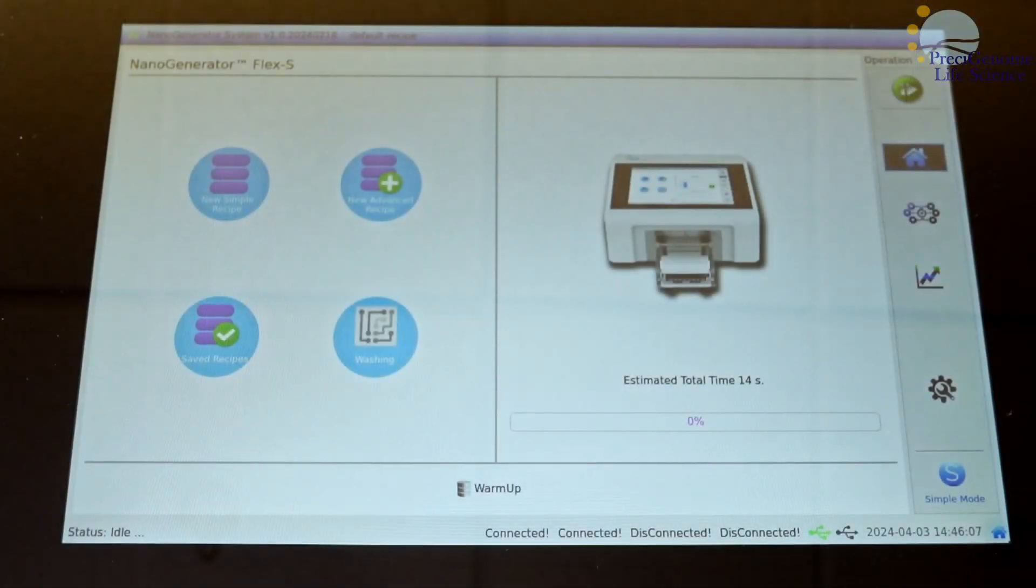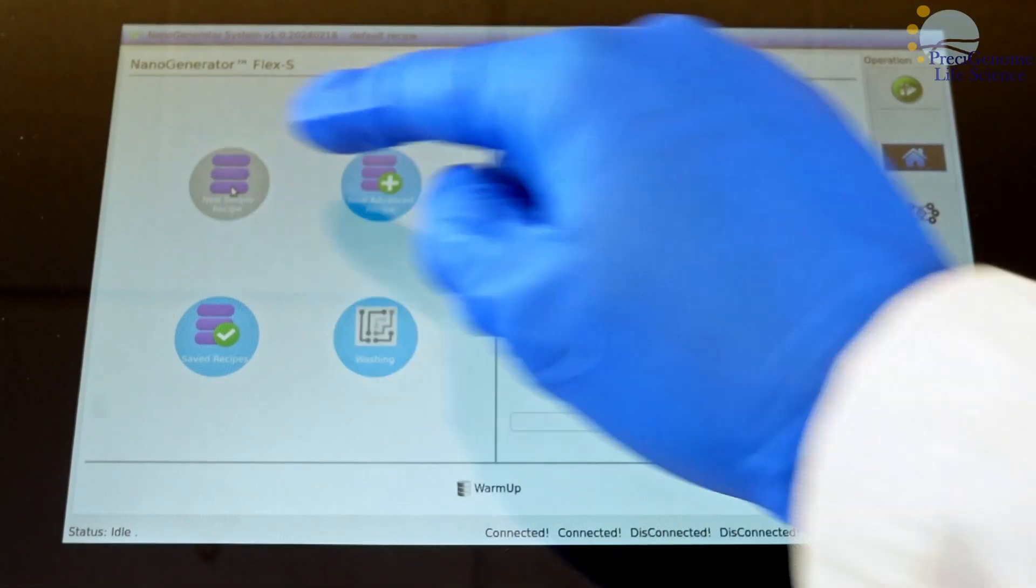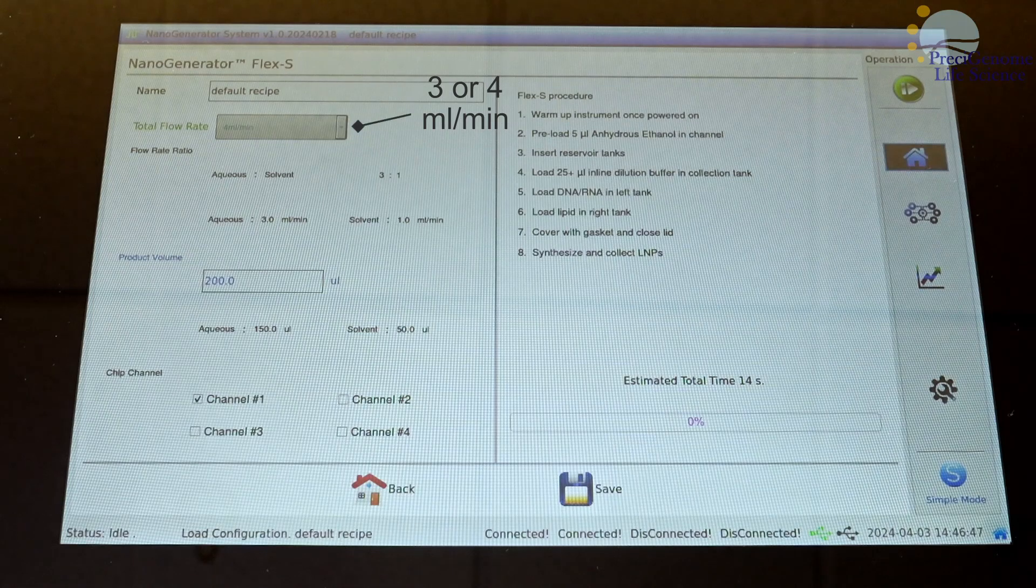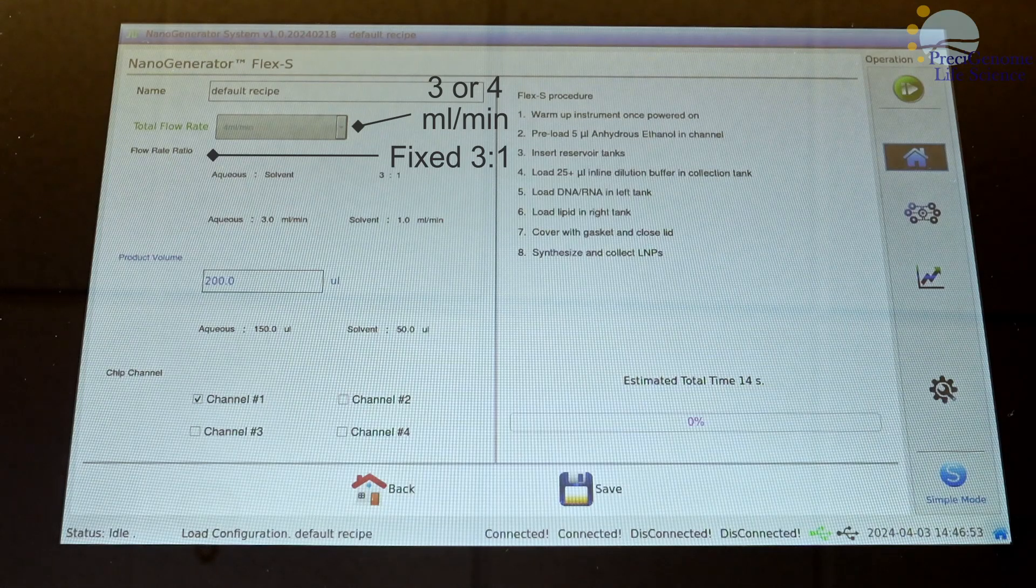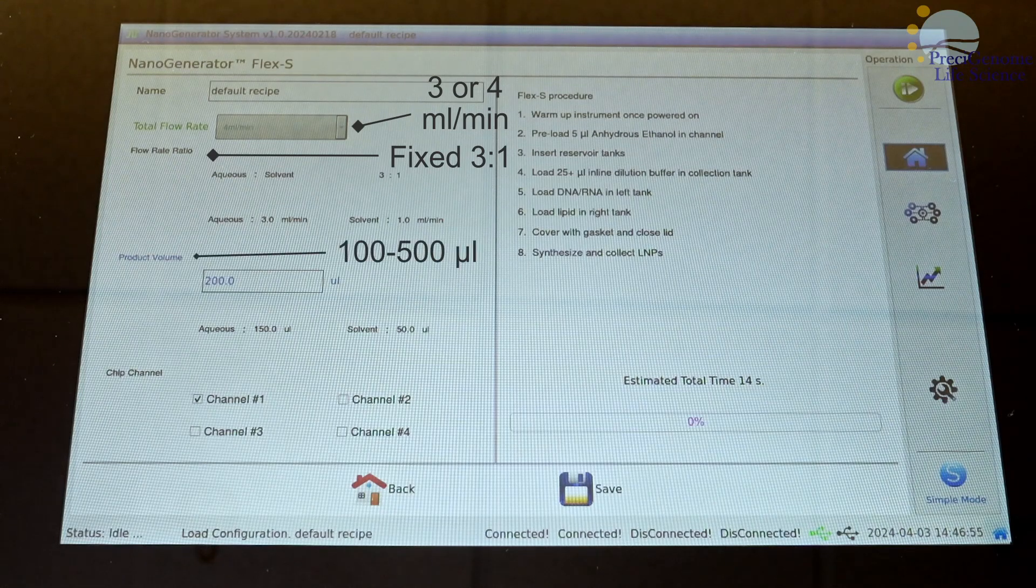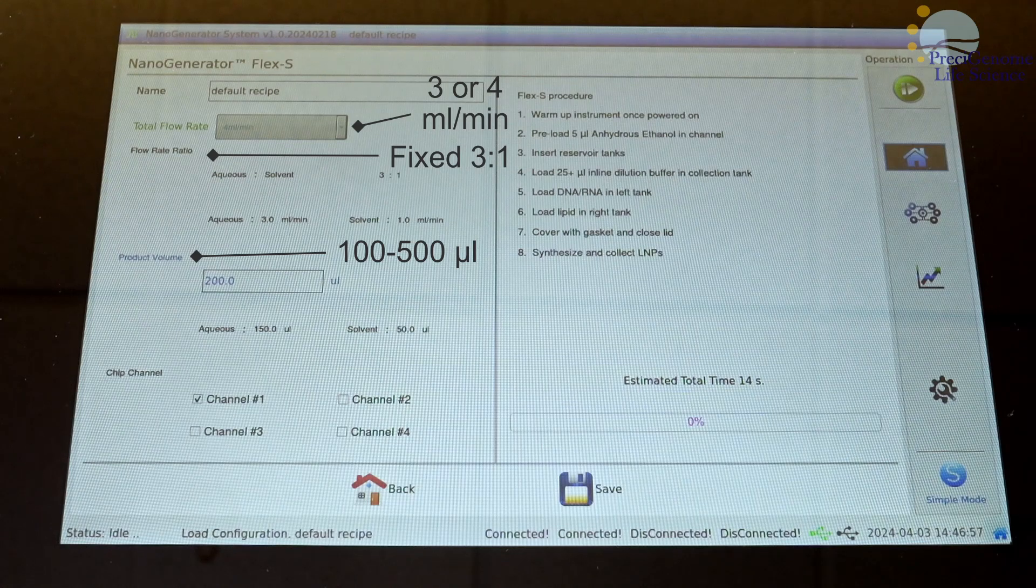The FlexS software has streamlined parameters for rapid screening. The total flow rate may be set to 3 or 4 mils per minute, while flow rate ratio is fixed at 3 to 1. The total volume may be set from 100 to 500 microliters.